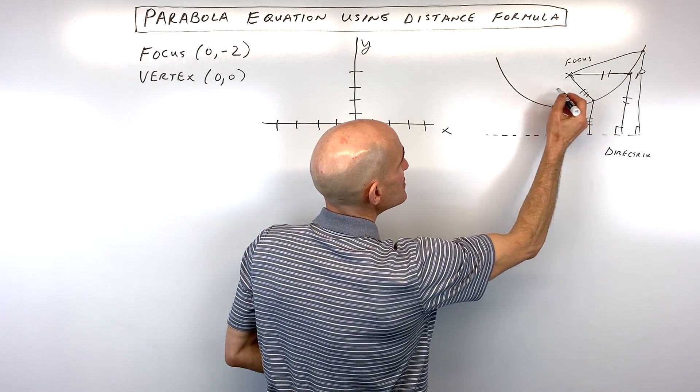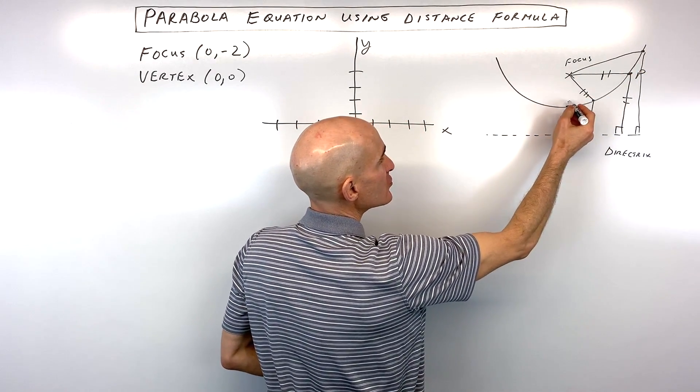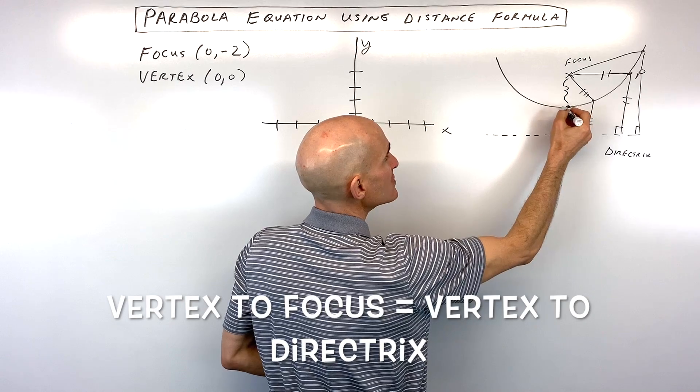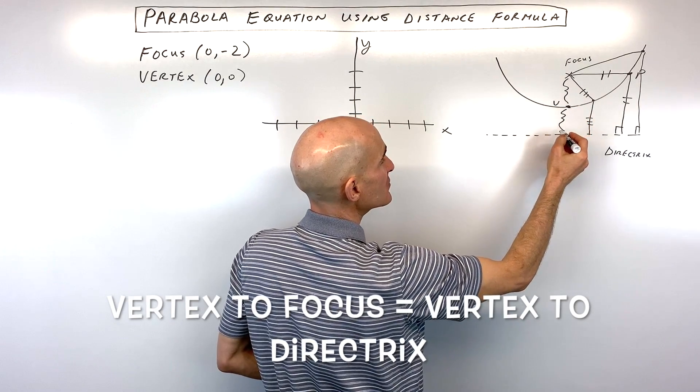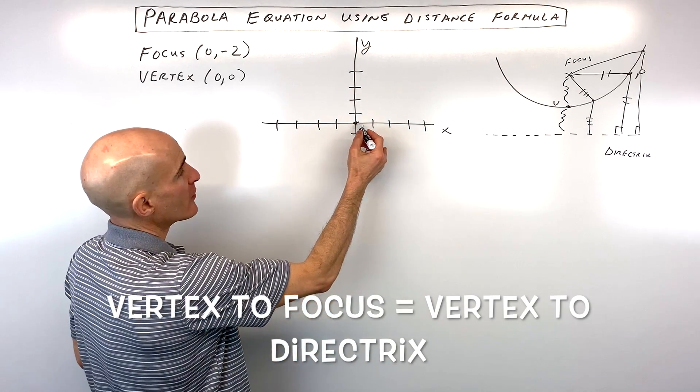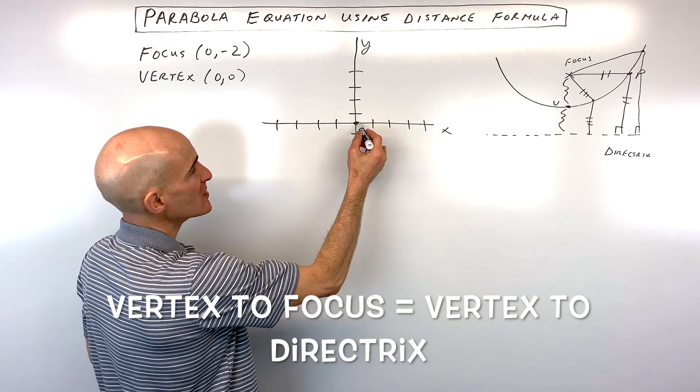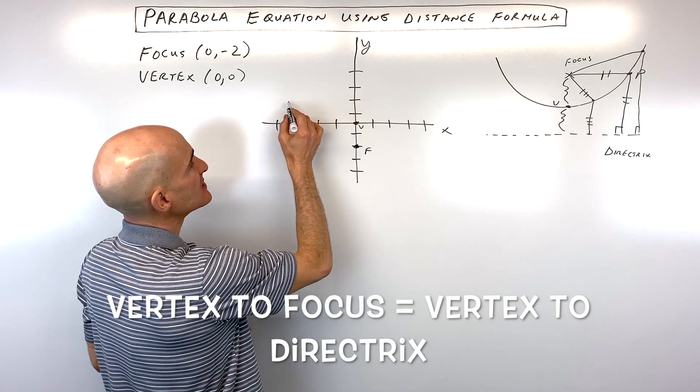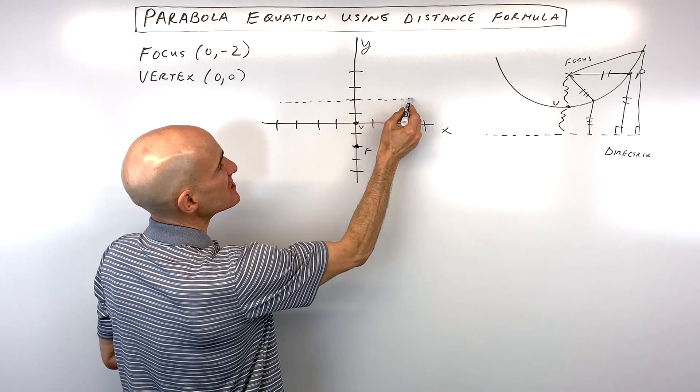And one thing to notice is that the vertex is where the parabola bends, where it changes direction. The distance from the focus to the vertex and the vertex to the directrix, that distance is the same. So that means if we're going from the vertex to the focus here, that's 2 units. If I go up 2 units, that's going to be where our directrix is.